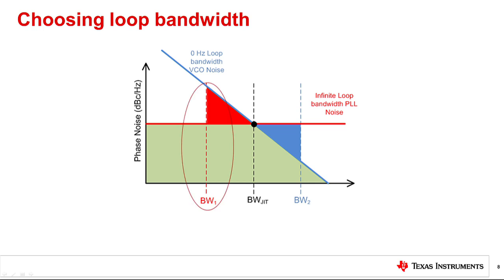We can see the reason why. Making the loop bandwidth less at offset BW1 adds the red portion to the integrated area. Making the loop bandwidth more, symbolized with BW2, adds the blue portion.